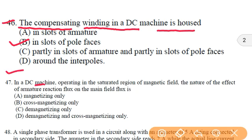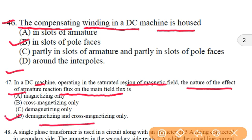In the next question, in a DC machine operating in the saturated region of magnetic field, the nature of the effect of armature reaction flux on the main field flux is both demagnetizing and cross magnetizing effects.